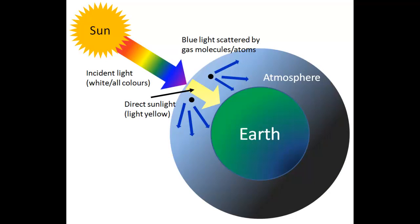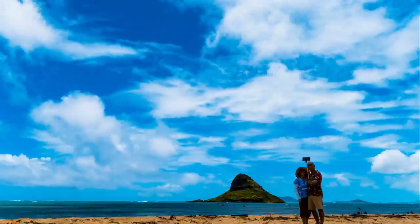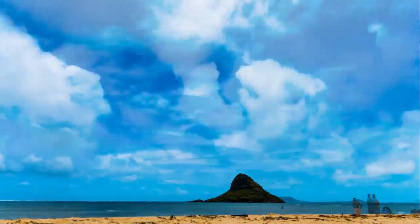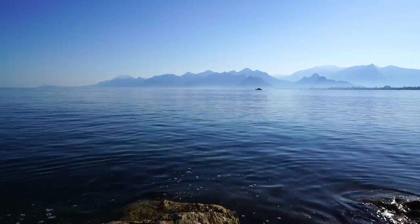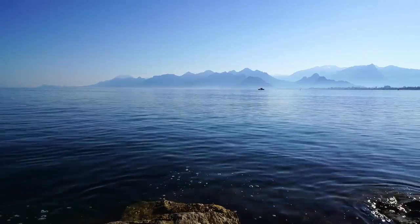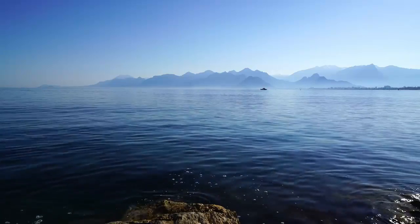Now let's compare both of these examples with our atmosphere as a large thick medium. Whenever sun rays enter, lots of colors are emitted, due to which we see differences in colors of the sun and sky as per the different timings in a day. Having some clarifications about the sun being the single most powerful source of light, let us discuss the role of the second most important source of illumination, that is the sky.